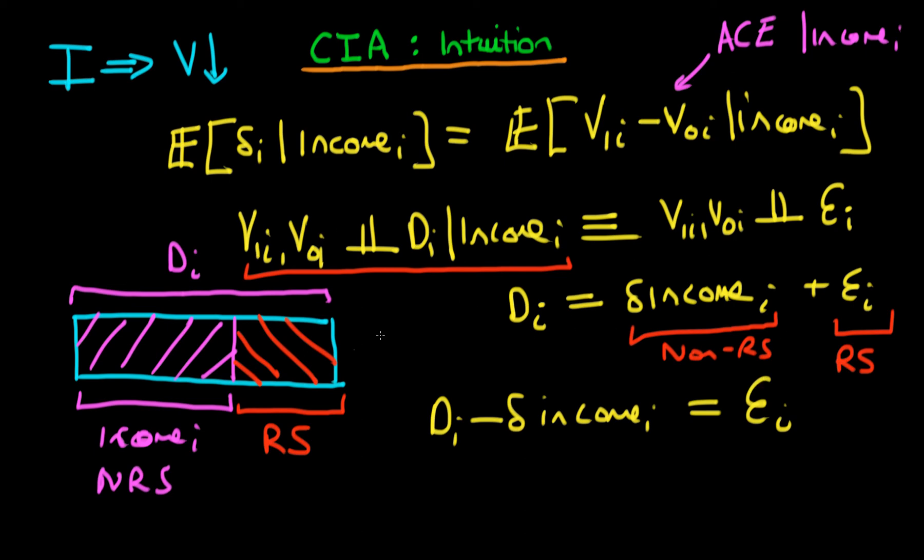And essentially, when we remove that part of Di which is conditional on income, because we're just left with this randomly selected part of Di, in that circumstance, the selection bias goes to zero. So when we condition on a particular state's level of income, and assuming that all the other factors which influence selection are essentially random, then we're just left with selection bias equal to zero. And in that circumstance, the difference in means between the two groups in terms of the mean level of violence evaluates to the average causal effect.